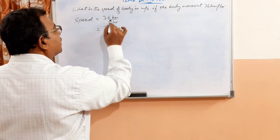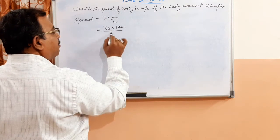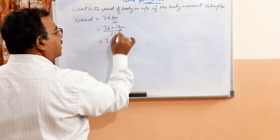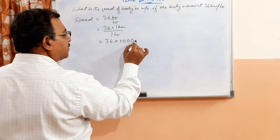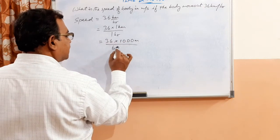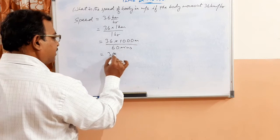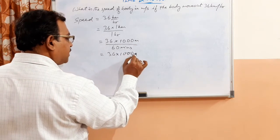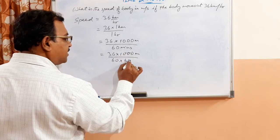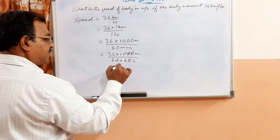Speed is given as 36 kilometer per hour. 36 kilometer means 36 into 1 kilometer; per hour means 1 hour. That is equal to 36 into 1 kilometer written as 1000 meters, and 1 hour written as 60 minutes. Again, 36 into 1000 meters by 60 — and 60 minutes is written as 60 seconds. Now let us cancel: zeros are getting cancelled.